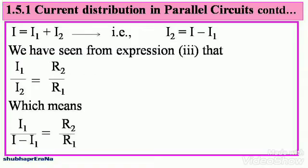I equals I1 plus I2. You know that the sum of the currents at a particular node is this. That is, I2 equals I minus I1. We are shifting I1 to the other side.